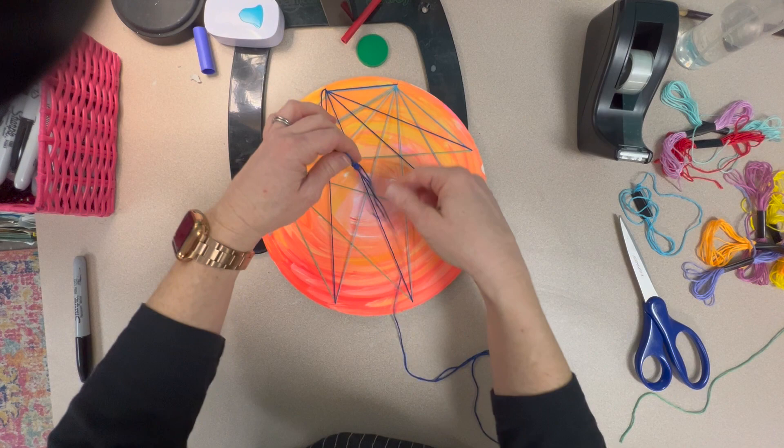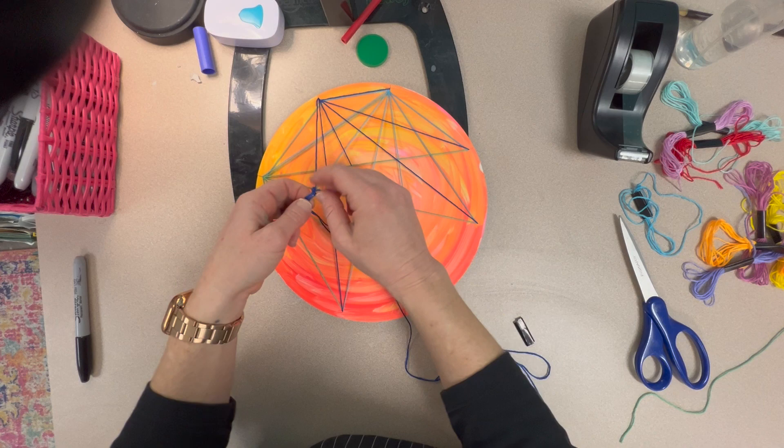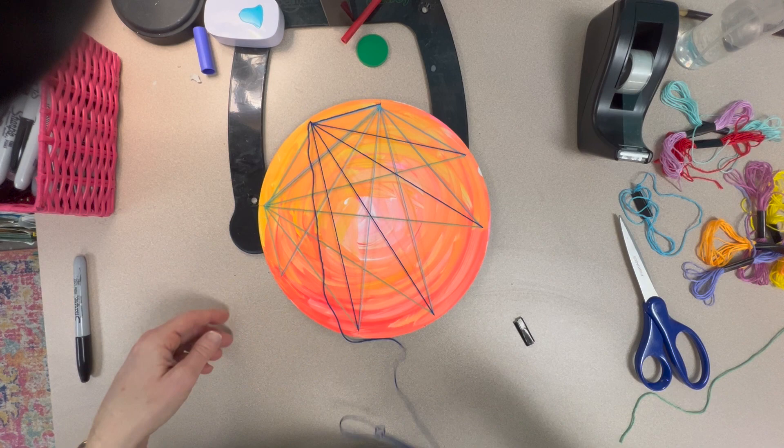Now this happens a lot with embroidery thread. If you get to a knot, very lightly try to pull it apart. Don't try to pull it too tight or else the knot will tighten and it will be impossible to get out.